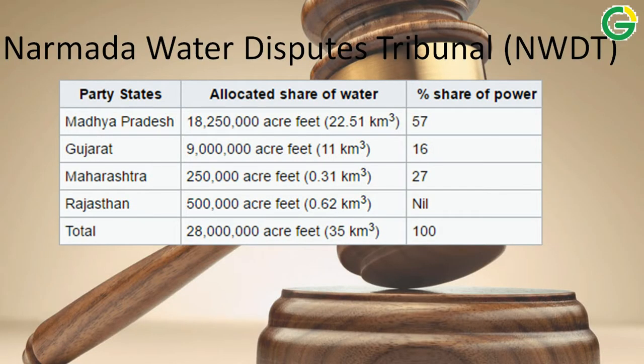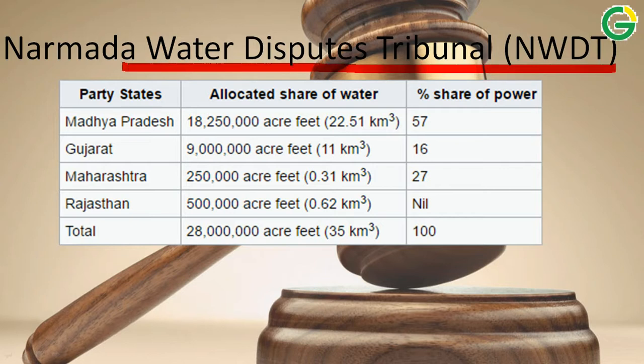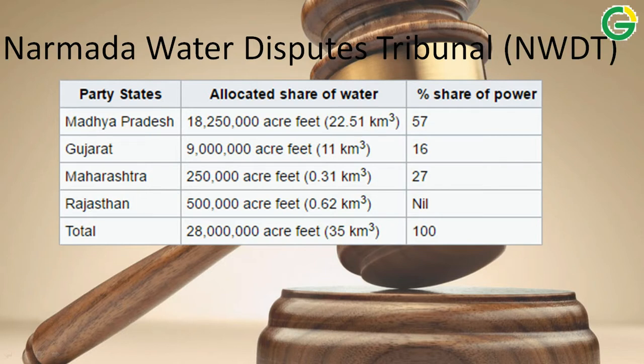As we all know, rivers in India — or river water in India — is a State List subject, and so every state fights with its neighboring state for river water. The lower riparian state always complains that the upper riparian state is not fulfilling its demands. Like all rivers, the Narmada water dispute is very famous. To resolve this, the government established the Narmada Water Disputes Tribunal. The verdict of the tribunal was that Madhya Pradesh will get 57% of the water, Gujarat 16%, Maharashtra 27%, and Rajasthan has no share.